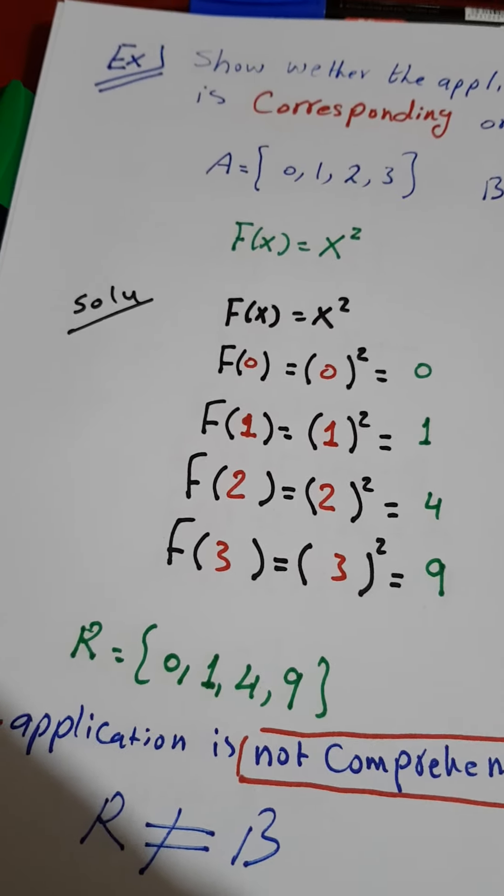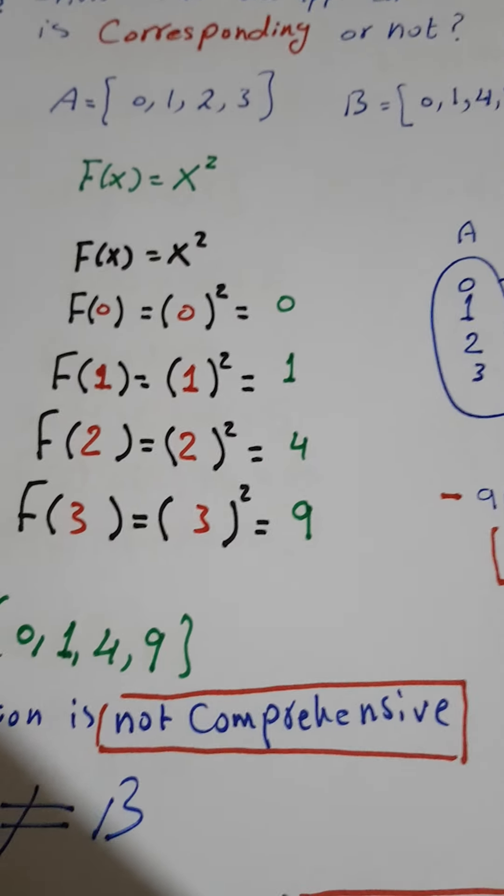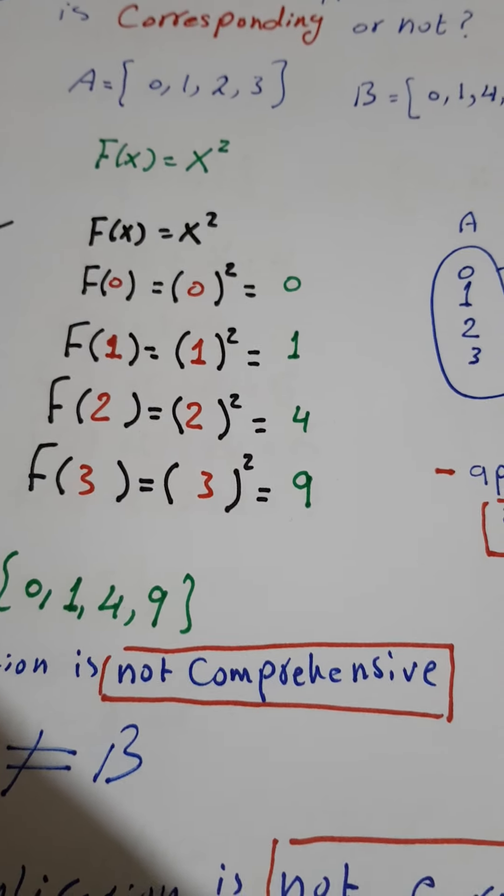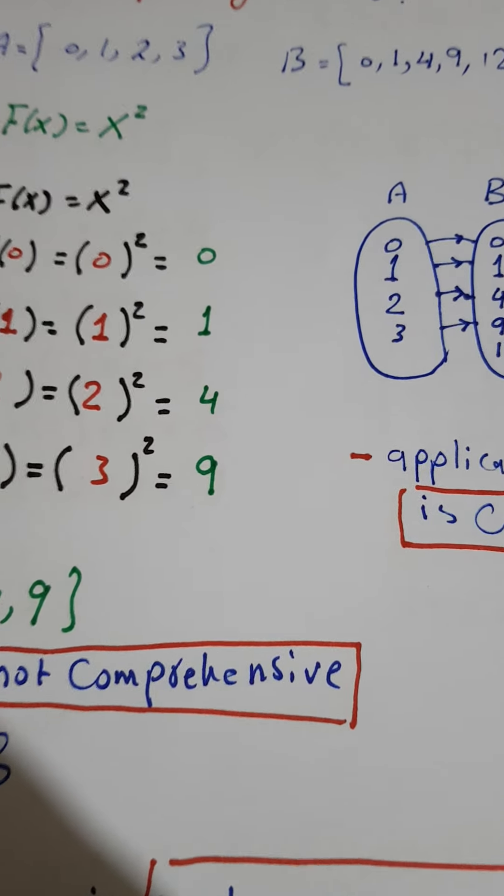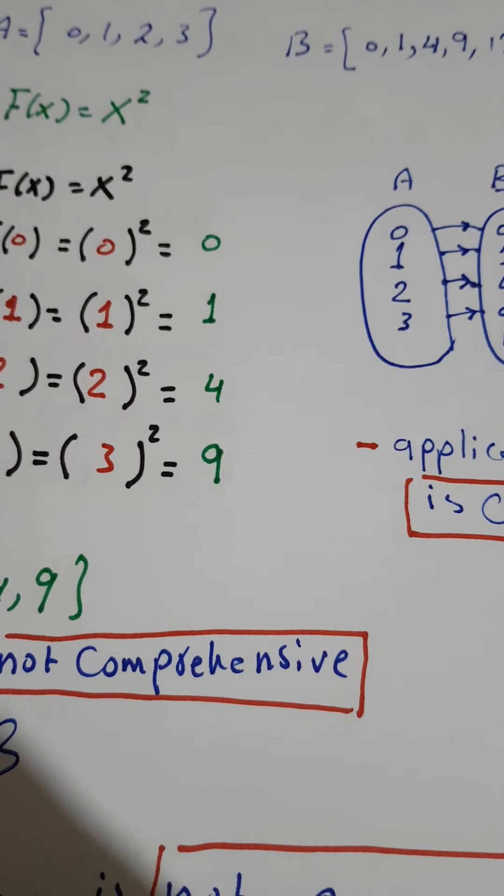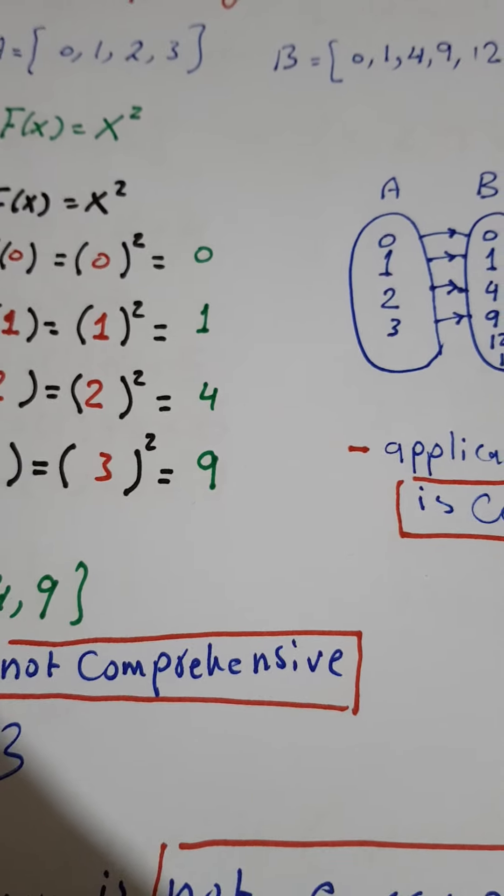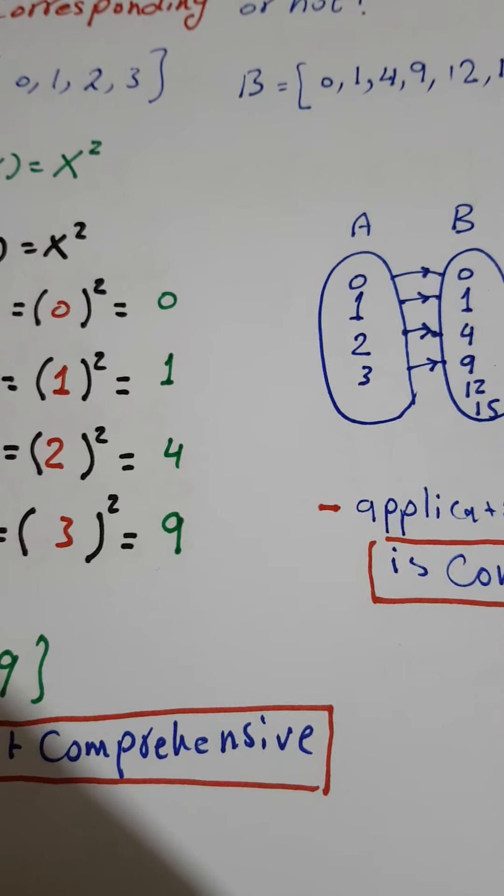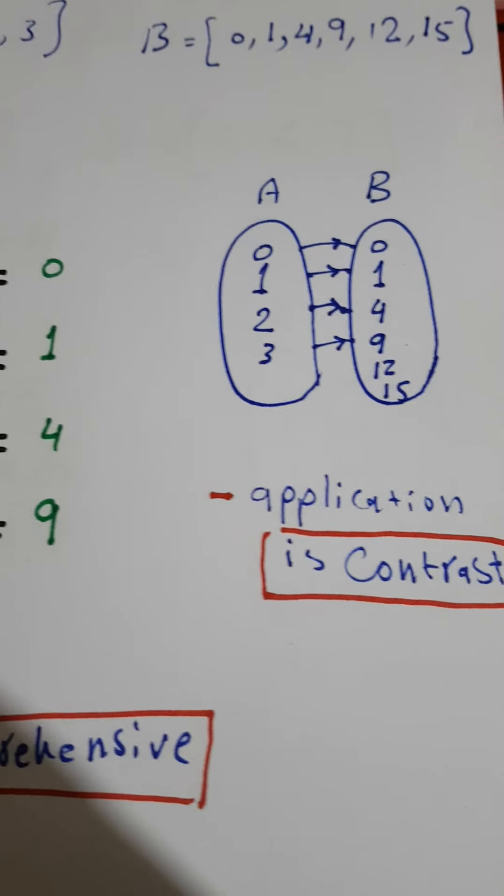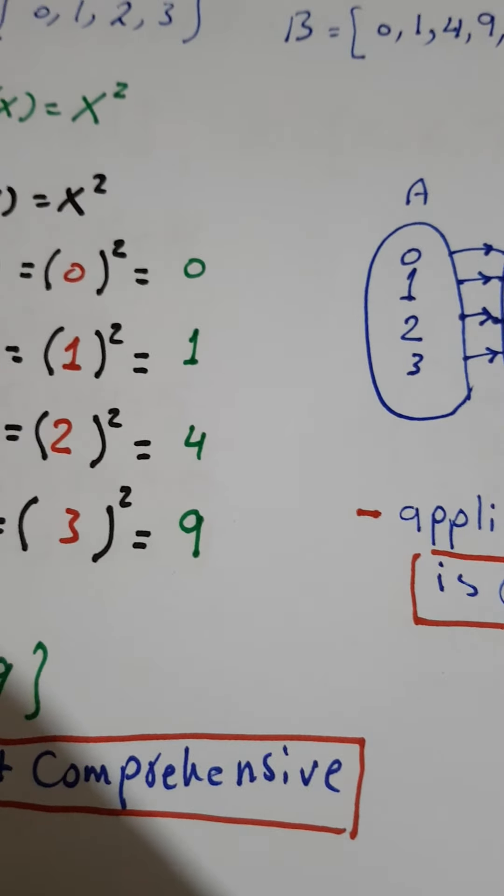And we go to the contrast: 0 to 0, 1 to 1, 2 to 4, and 3 to 9. We have remaining 12 and 15. The application is contrast.